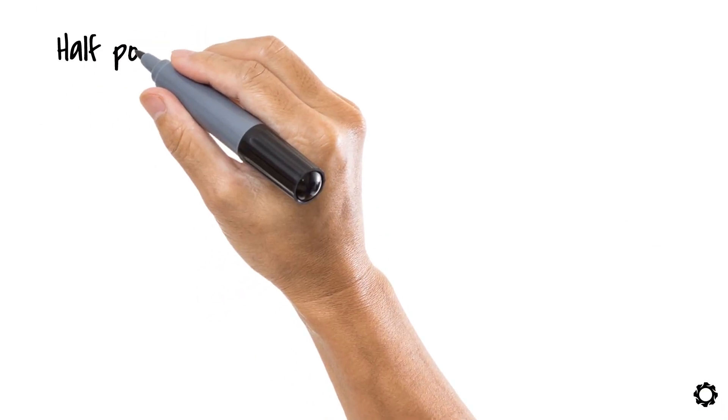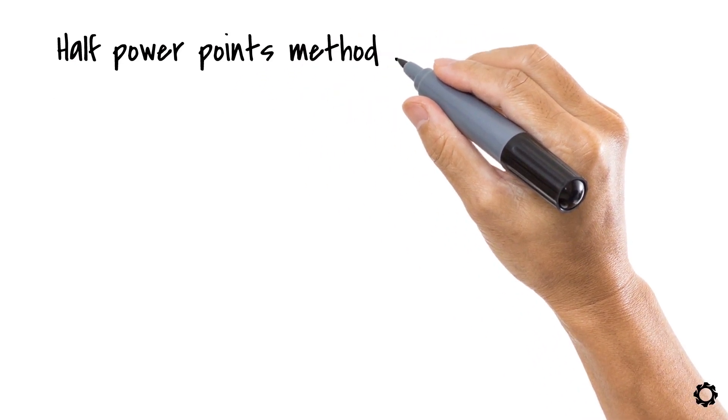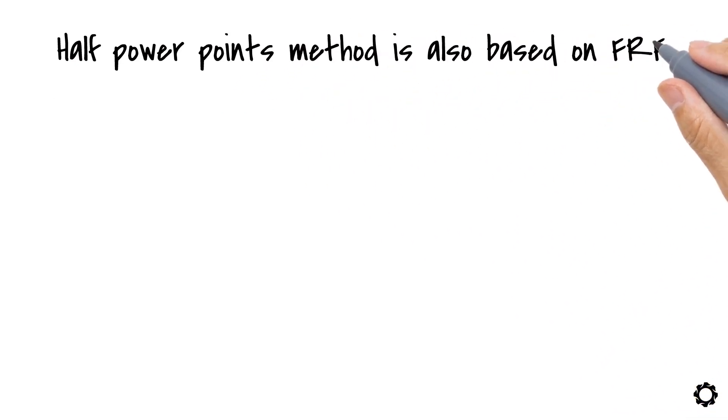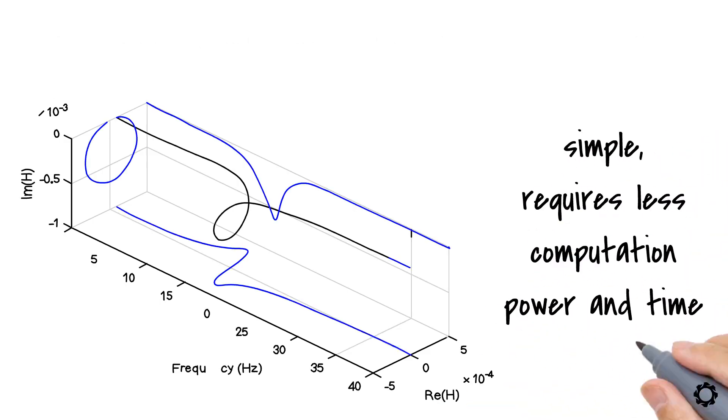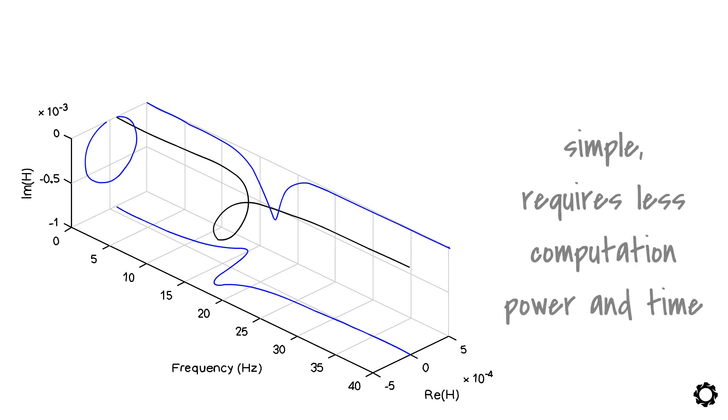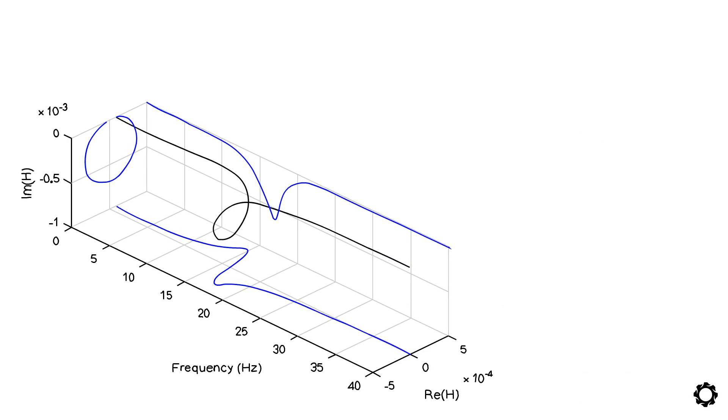In this third case, the half power point method is also based on the frequency response function or FRFs. Its application is pretty simple and requires less computation power and time than the curve fitting techniques. So let's go ahead and wrap up this topic of damping estimation with this nice method.